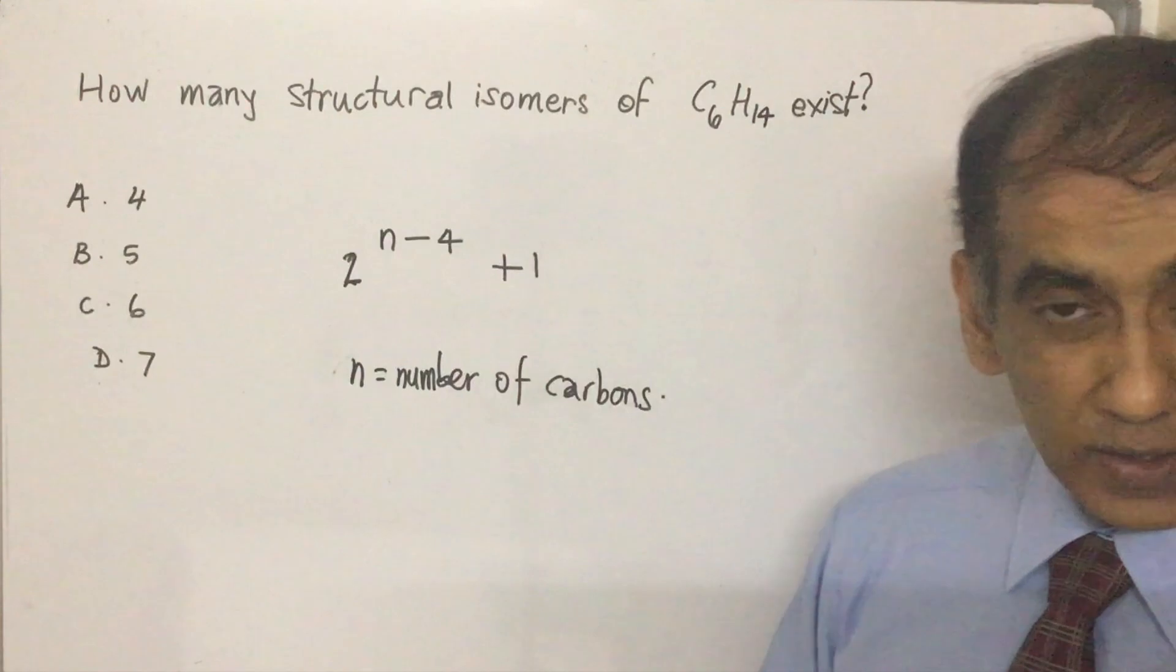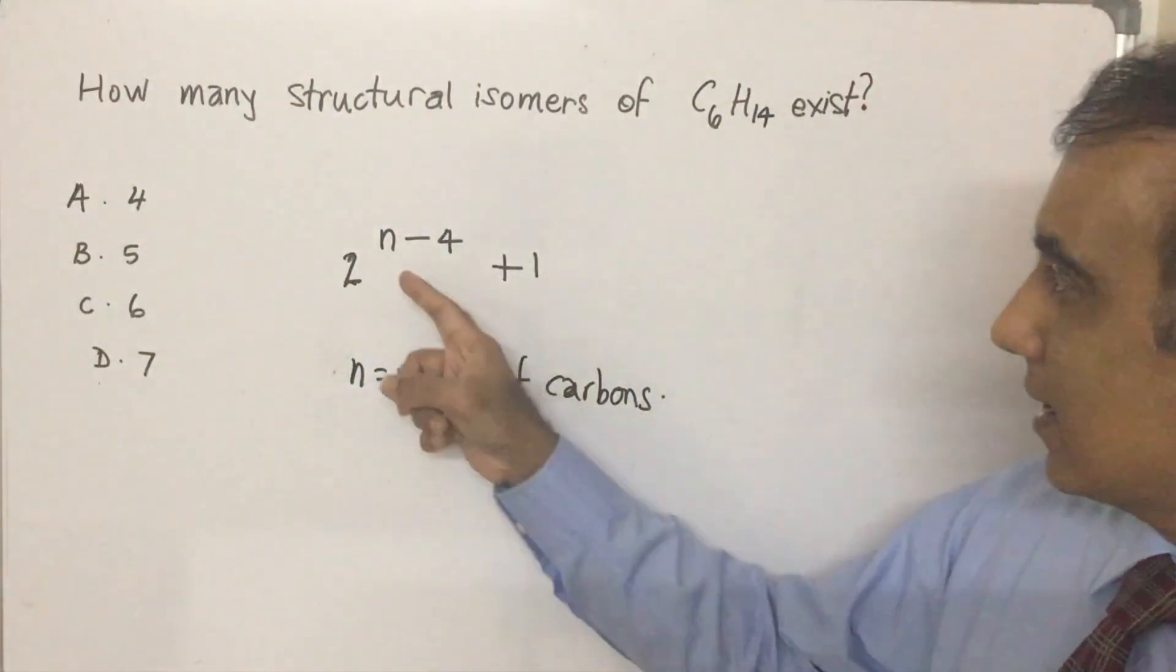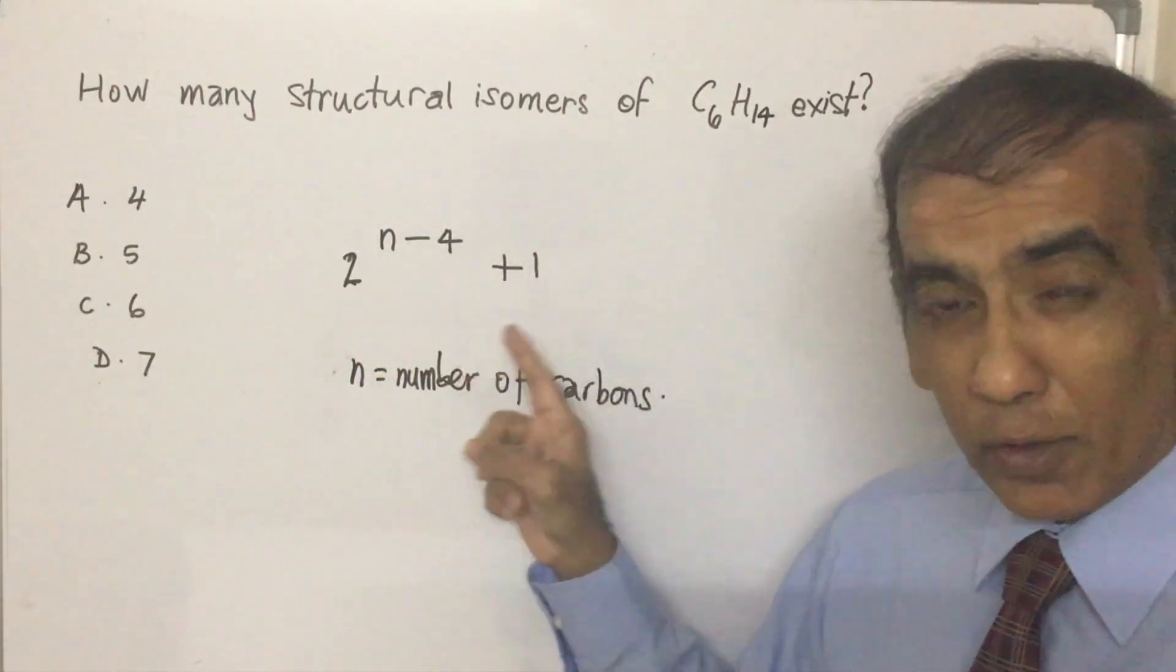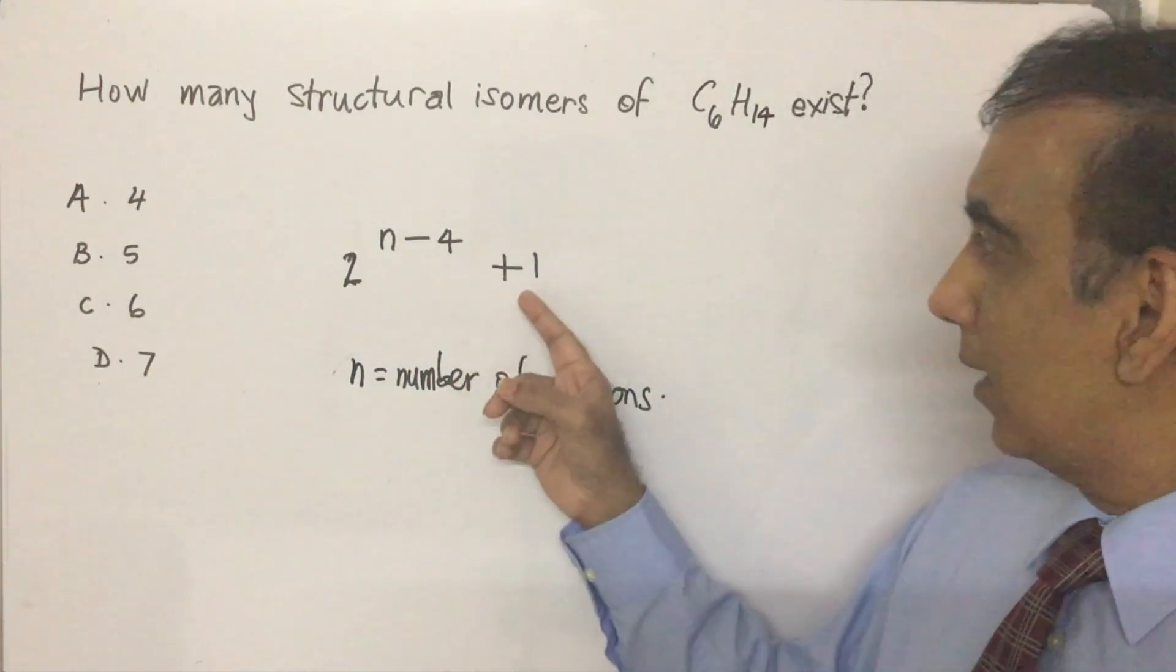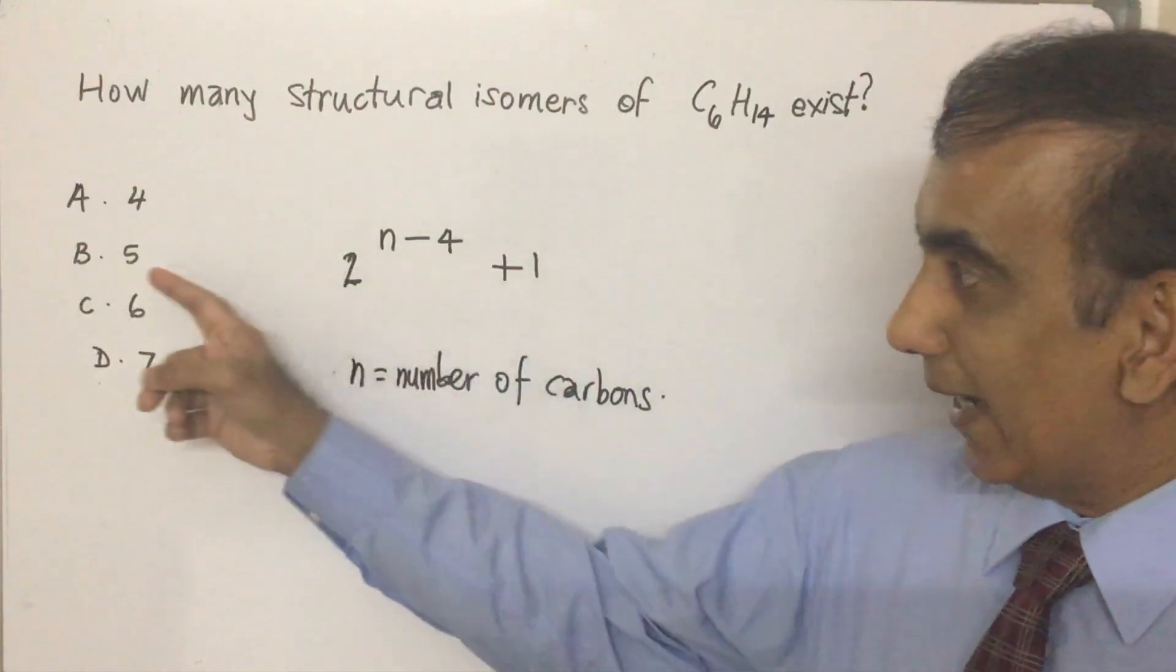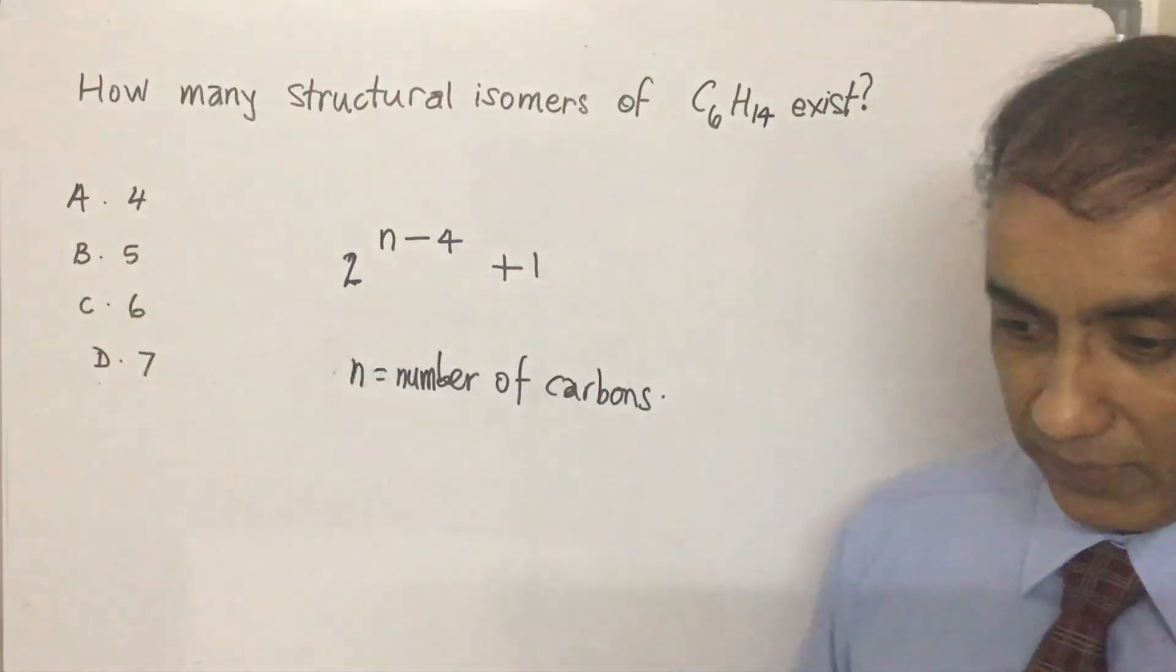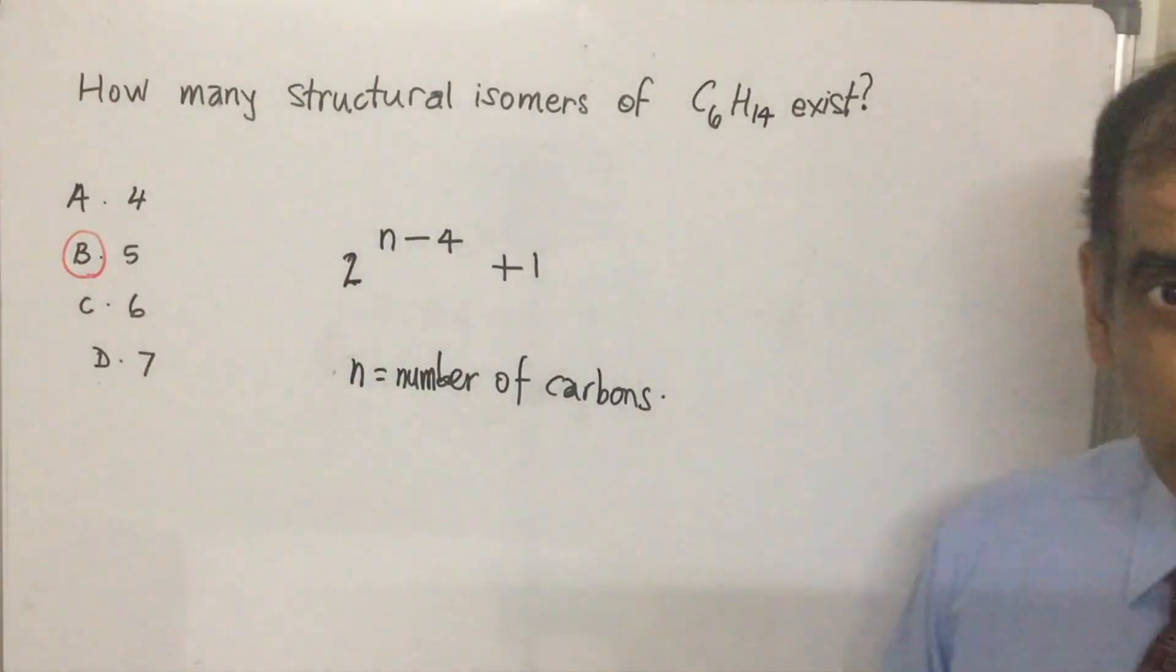So let's plug in the formula and see if it works. n equals 6 because there's 6 carbons, the number of carbons, 6 minus 4 is 2. 2 to the power of 2, 2 multiplied by 2 is 4, plus 1, 5. Answer to the question? 5. So we've solved the answer to this question in three ways.